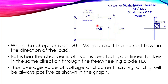When the switch is open, there is no output voltage across the load, but there will be output current which flows through the closed path through the freewheeling diode. So the output voltage and output current are both positive, which is why it is called a first quadrant chopper.